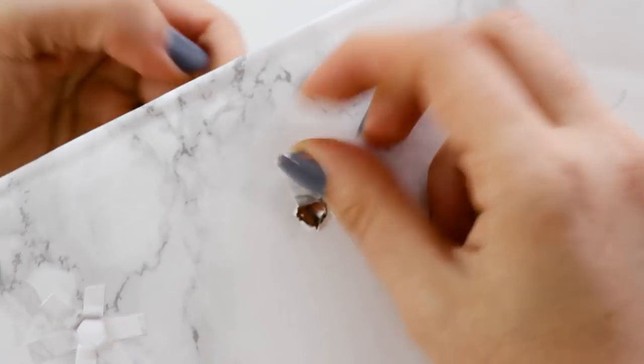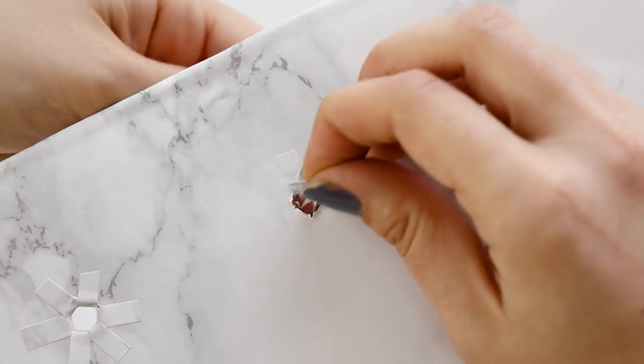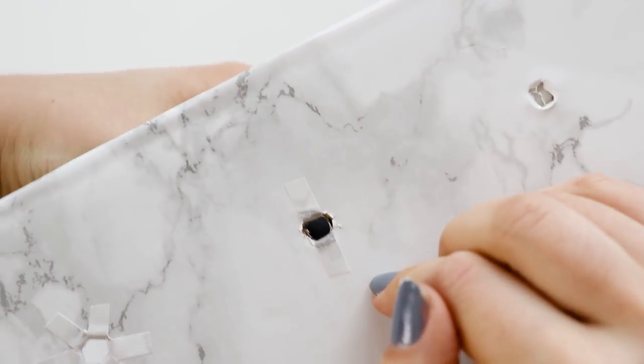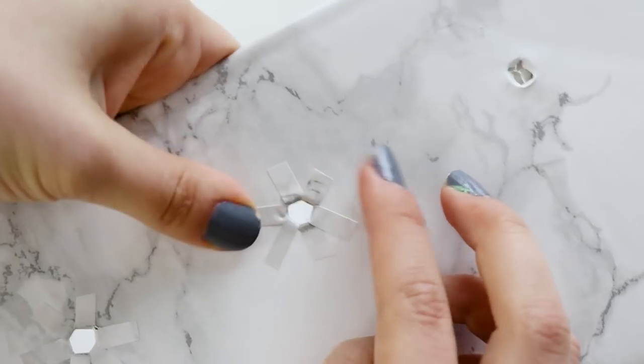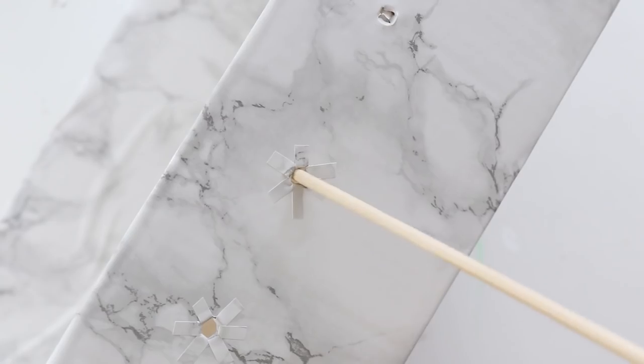Cut tiny strips of contact paper and stick them through the holes to make almost a star pattern. This will ensure that your dowels can move and slide through them easily.